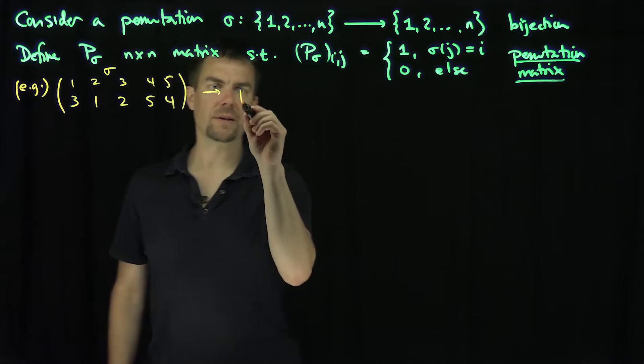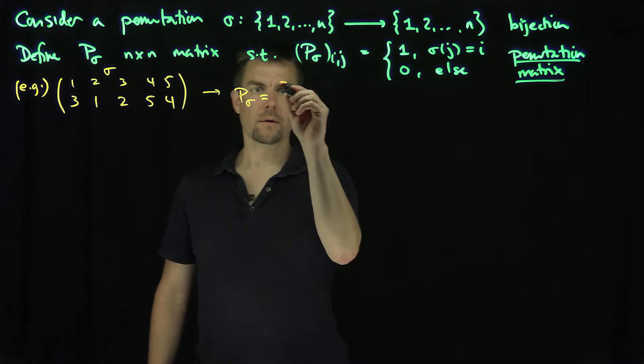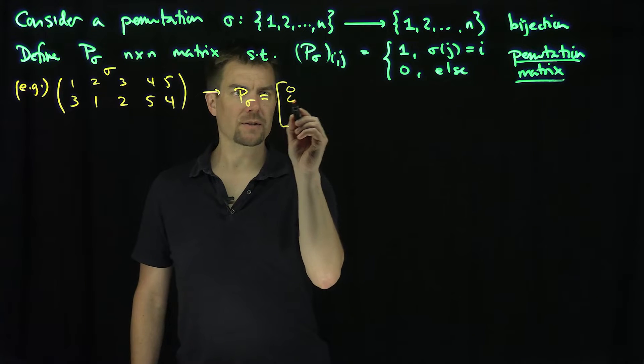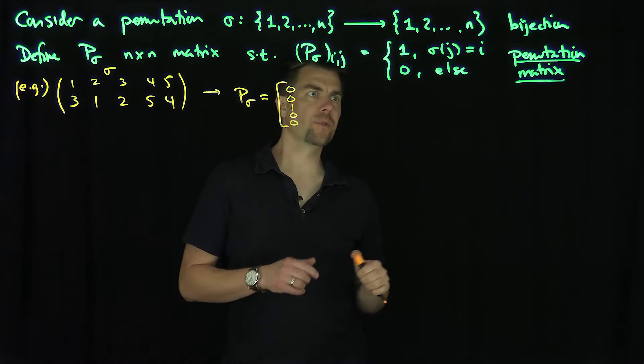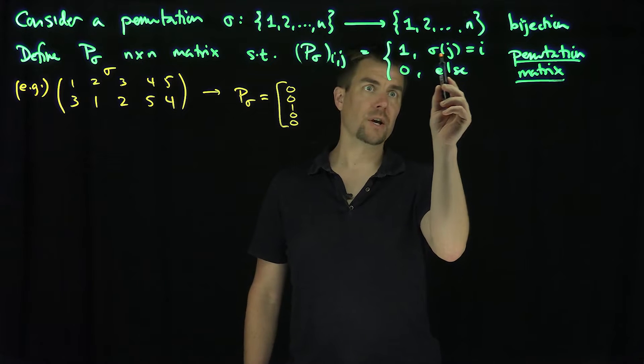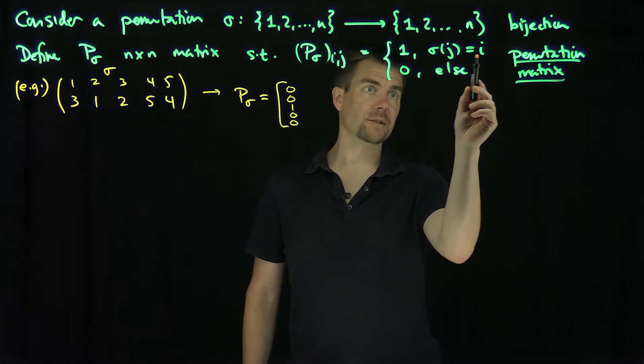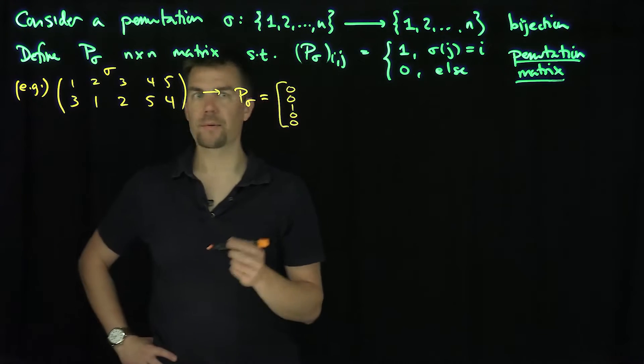My P_sigma is going to be equal to, I'm going to have a 0, a 0, a 1, 0, 0. Let's see why that makes sense. If we think of my j is 1 in this case, sigma of 1 has to be equal to 1. Sigma of 1 is equal to 3, so the only time I get a 1 is in the third column.